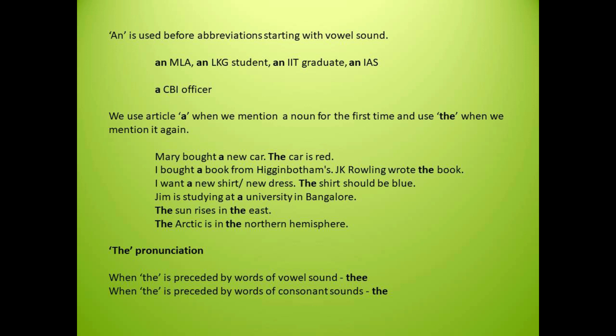Now it's time for something interesting — the pronunciation of 'the.' When the article 'the' is preceded by words starting with a vowel sound, we pronounce it as 'thee.' When the article is preceded by words starting with consonant sounds, we pronounce it as 'thuh.' For example: the apple, the umbrella, the elephants — pronounced 'thee.' And the books, the students, the television — pronounced 'thuh.'